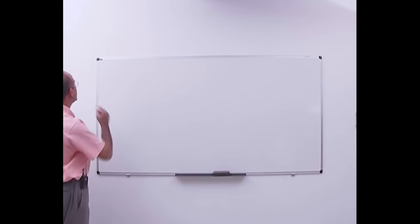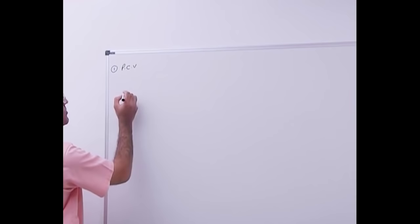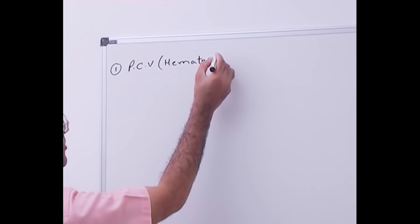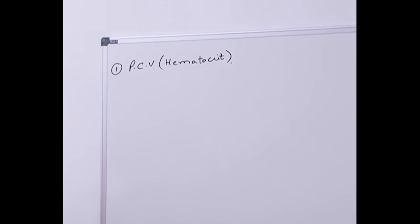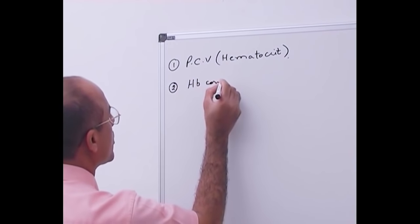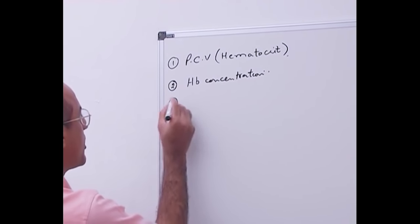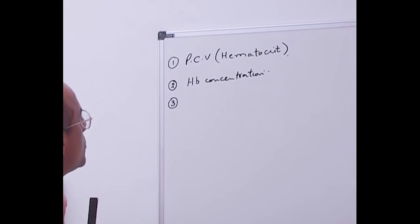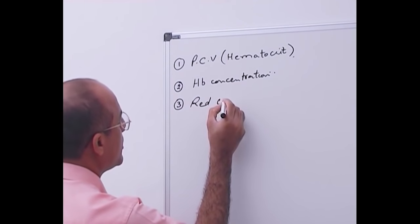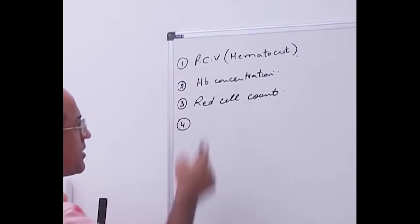The important terms you should know are: number one, what is meant by packed cell volume, also called hematocrit — you should be clear about what it is after the lecture. Number two, you must know the concept of hemoglobin concentration. Number three, you must be clear about red cell count.